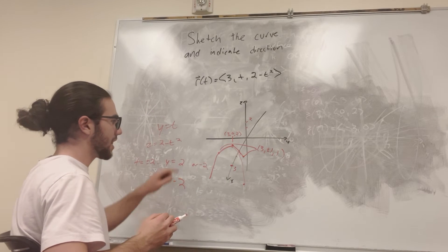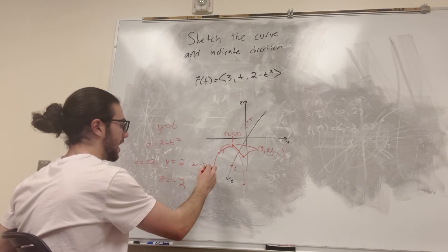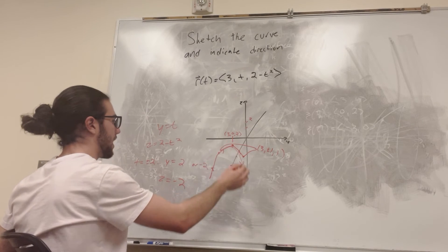And if you notice that we've been going, this is the negative side, this is the positive side, so you have to show that this is where t is equal to negative, this is where t equals 0, and this is where t equals positive numbers. So it's going in this direction.